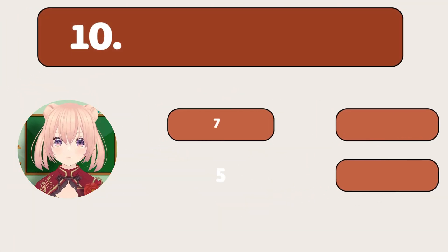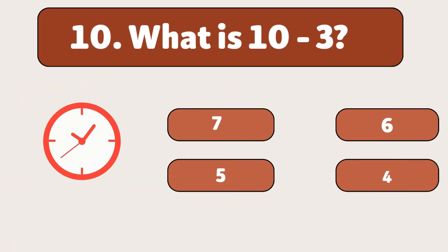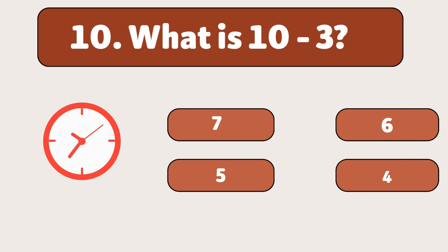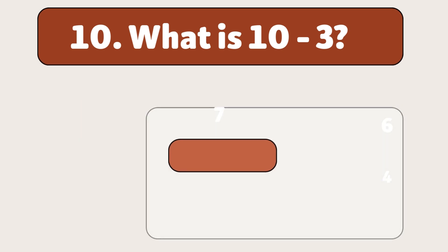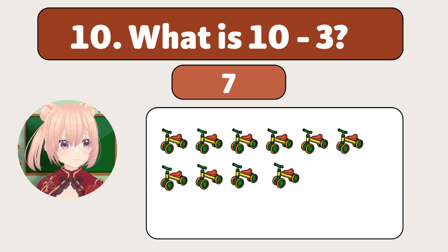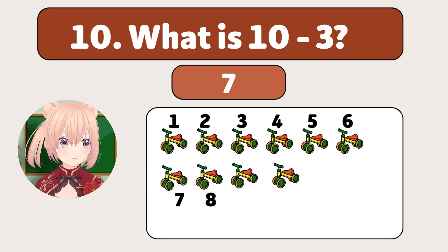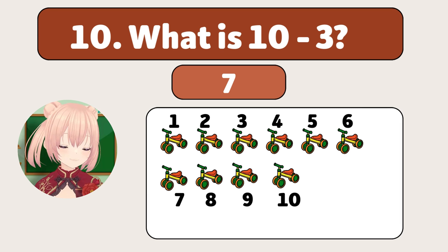What is 10 minus 3? The answer is 7! We start with 10 bicycles and take away 3!